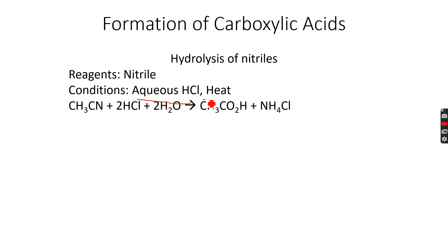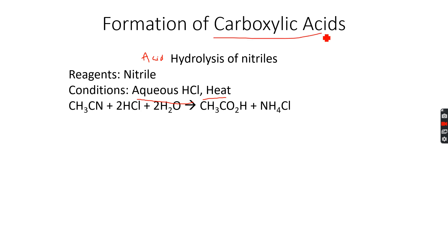Upon hydrolyzing nitriles, the conditions are aqueous HCl and heat. Hydrolyzing the nitrile gives us the carboxylic acid along with ammonium chloride. Remember — this is acid hydrolysis of nitriles, not alkaline hydrolysis. It is always acidic hydrolysis that gives the carboxylic acid.